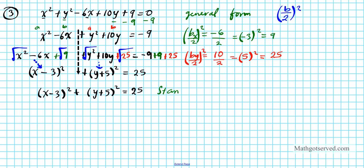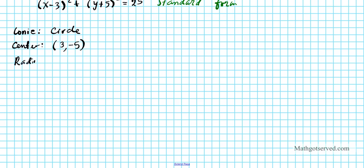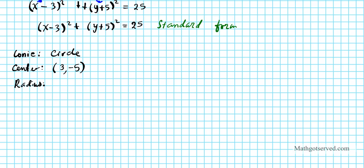We can clearly see this is a circle — two squares, a plus, denominators of 1. The conic is a circle. Now find the components: the center is the opposite of the numbers next to each variable — next to x is -3, so +3; next to y is +5, so -5. Center is (3, -5). The radius is √25 = 5, meaning we go 5 units in all directions from center (3, -5).